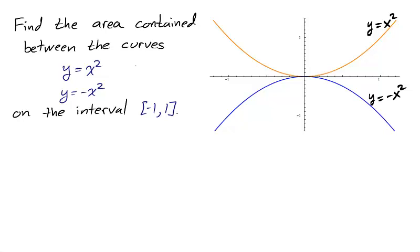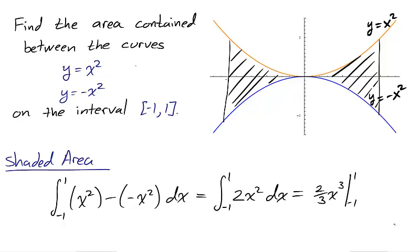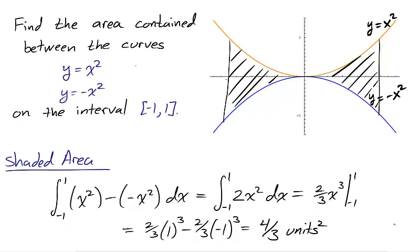Let's find the area contained between the curves x-squared and negative x-squared on the interval negative 1 to 1. The function x-squared is always positive, while the function negative x-squared is always negative. Therefore, x-squared is always above negative x-squared. To find the area of the shaded region, we take the integral from negative 1 to 1 of x-squared, the top function, minus negative x-squared, the bottom function. Since 2x-squared is continuous, we can use the Fundamental Theorem of Calculus, Part 2, taking the difference of the antiderivative 2/3 x-cubed at 1 and negative 1. We find that the area of the shaded region is 4/3.